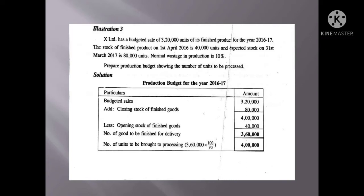So what is the formula? To account for normal wastage, we use: units required multiplied by 100 divided by 90. We calculate 3,50,000 into 100 divided by 90, which gives 3,88,889 units to be produced. Adding the other figures, we get a total of approximately 4,00,000 units to produce.